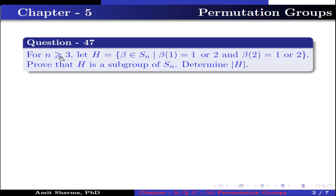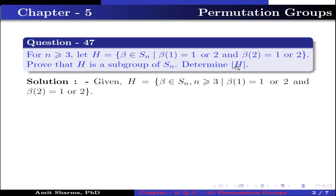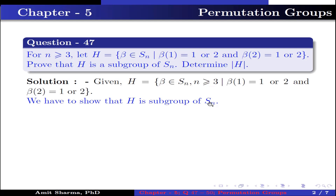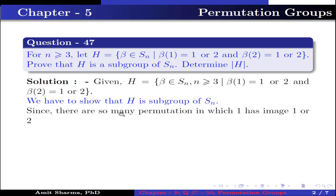Question number 47: for n greater than or equal to 3, let H contain the permutation beta belonging to S_n such that beta(1) is 1 or 2 and beta(2) is 1 or 2. Prove that H is a subgroup of S_n and determine the order of H. Given H containing permutations beta in S_n with n ≥ 3 such that beta(1) is 1 or 2 and beta(2) is 1 or 2. We have to show H is a subgroup of S_n. Since there are permutations where 1 has image 1 or 2 and 2 has image 1 or 2, H is non-empty.